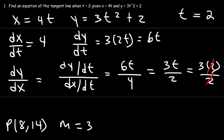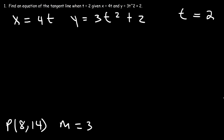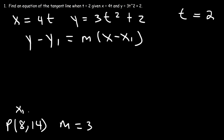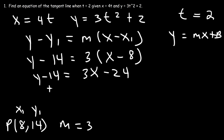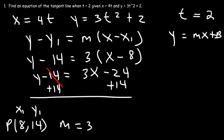Now that we have the x and y coordinates of our point and the slope, we can determine the equation of the tangent line. x1 is 8 and y1 is 14. So it's going to be y minus 14 equals 3 times x minus 8. This is the equation in point-slope form. Distributing the 3, we get 3x minus 24. Adding 14 to both sides, negative 24 plus 14 is negative 10. So the equation of the tangent line is y equals 3x minus 10.